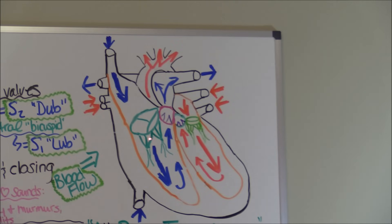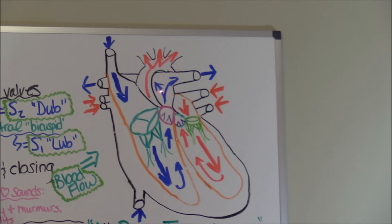When you hear S1, that is the beginning of systole. Your ventricle contracts, causing a lot of pressure on your semilunar valves. They open up and allow blood to rush through up through the pulmonary artery. Then they close because pressure falls once the blood goes through, and you will hear S2, signifying the closure of those semilunar valves.